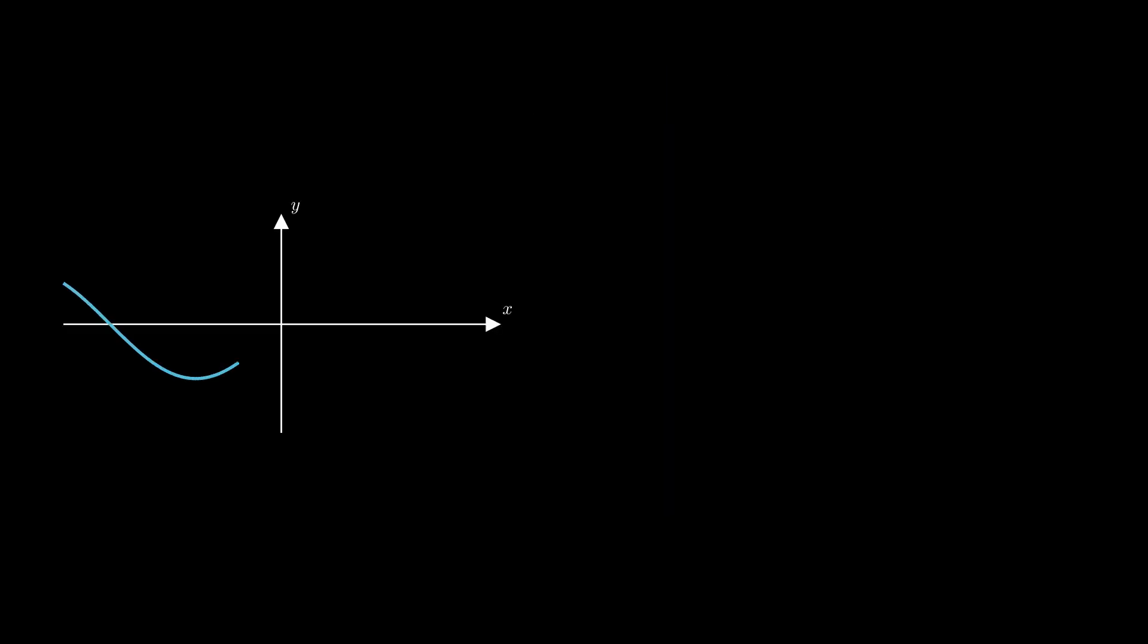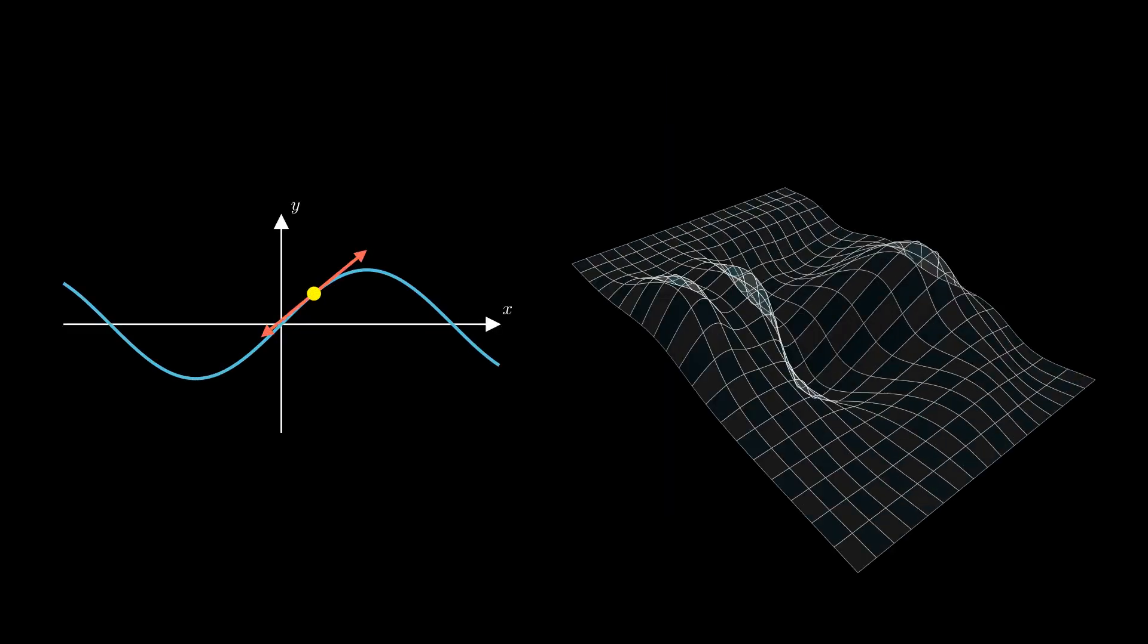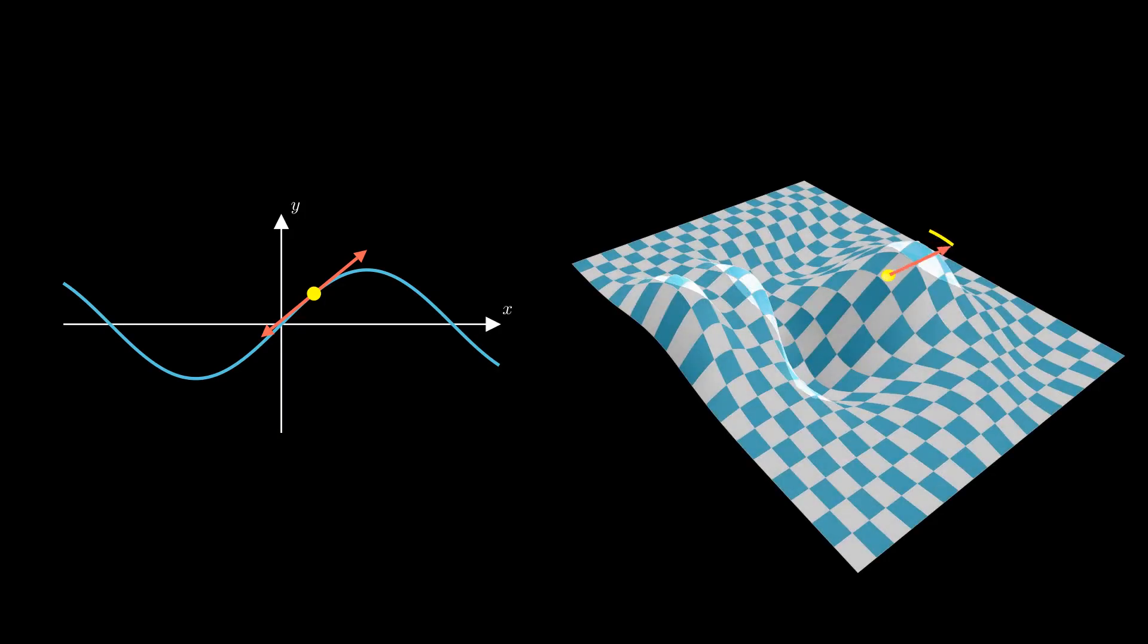First, we select a random starting point, after which we'll need to come up with a sequence of steps that will take us to the minimum. But the problem is that there are many different paths we can take. In the one-dimensional case, on each step we can only go left or right, but in two dimensions, at every point, there are infinitely many directions.